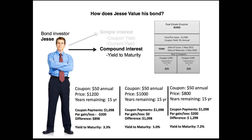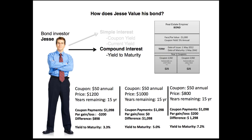Under compound interest, let's look at yield to maturity. As we discussed with current yield, we weren't accounting for the difference between what somebody pays for a bond versus what the bond is redeemed for when it reaches maturity and the face value is paid back. Yield to maturity accounts for that. Not only does it use compound interest, but it also accounts for the difference between the price you pay and the face value — wrapping all the variables together to give you a real estimate of what you'll get if you buy a bond and hold it to maturity.